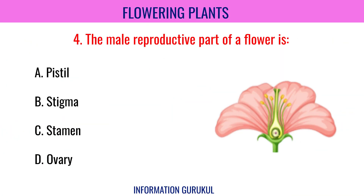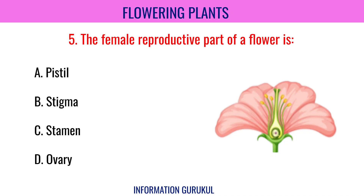The male reproductive part of a flower is Stamen. The female reproductive part of a flower is Pistil.